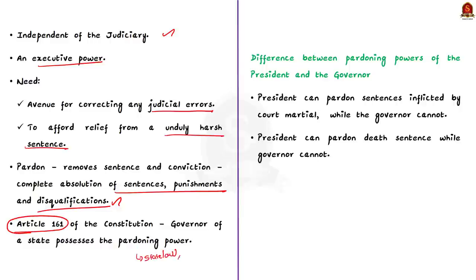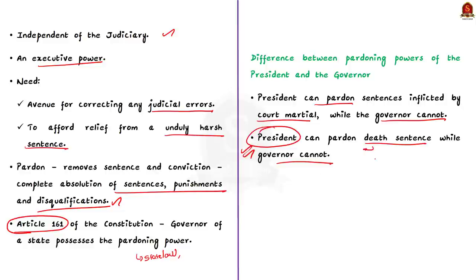Remember that pardoning powers of the Governor differ from those of the President. The President can pardon sentences inflicted by military courts, but the Governor cannot. The President can pardon death sentences, but the Governor cannot. Even if the state law prescribes a death sentence, the power to grant pardon lies with the President only. But other than this, the Governor can suspend, remit or commute a death sentence.